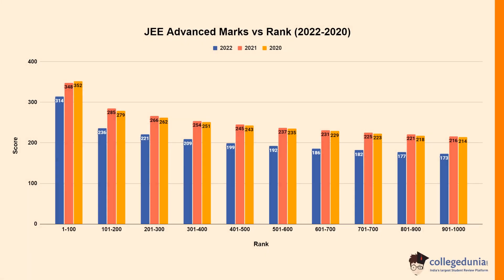Let's check the JEE Advanced marks versus rank from 2020 to 2022. For rank 1–100, the cut-off score was 314 in 2022, 348 in 2021, and 352 in 2020. For rank 101–200, cut-off score was 236 in 2022, 285 in 2021, and 279 in 2020. For rank 201–300, cut-off score was 209 in 2022, 254 in 2021, and 251 in 2020.